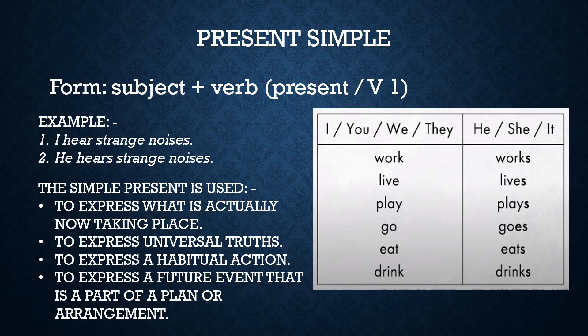The simple present is used to express habitual actions — for example: 'I get up every day at six o'clock,' 'He takes exercise every morning.' It is also used to express a future event that is part of a plan or arrangement — for example: 'We go to Chennai next Thursday,' 'She sails for London next month,' 'The college reopens next week.' That is all about the present simple tense.